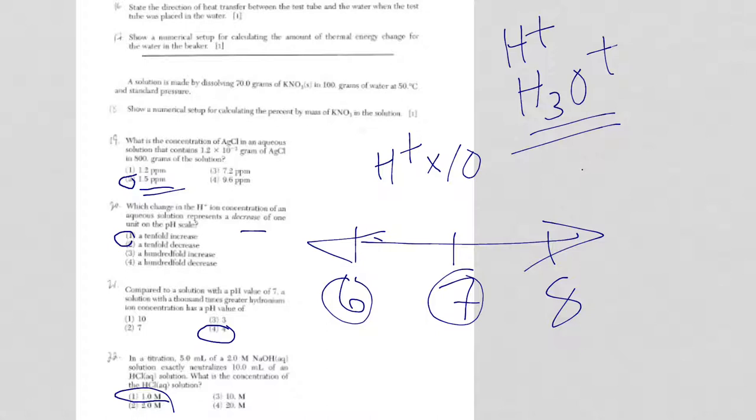Take a look at question 21. Same thing, right? I start with a pH value of 7, and then I have a solution with a thousand times greater hydronium ion concentration. So for every unit I move down, the hydrogen ion, which is the same as the hydronium ion, is increasing by a factor of 10.